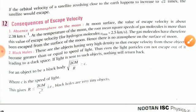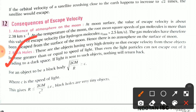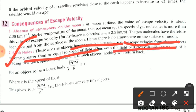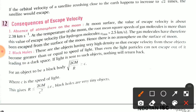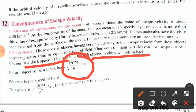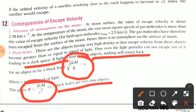Now we talk about black holes. These are objects having very high density, such that the escape velocity from these objects becomes greater than or equal to the speed of light. Thus even light particles cannot escape out of them, leading to a dark space. If light is sent to such objects, nothing will return back. For an object to be a black hole: root(2GM/R) ≥ c, which gives R ≤ 2GM/c². Black holes are very tiny objects.